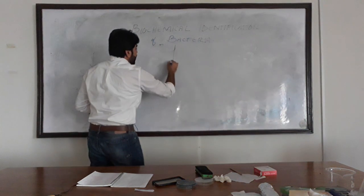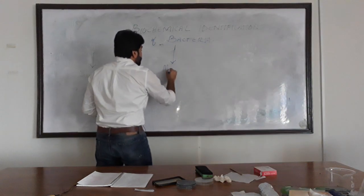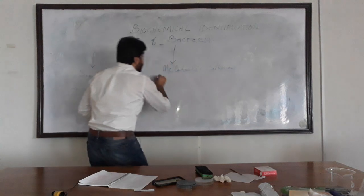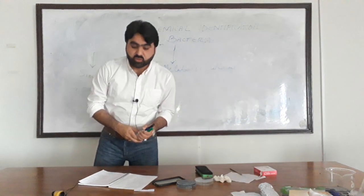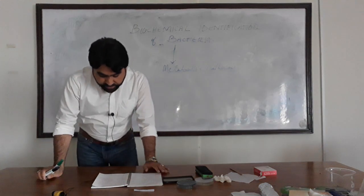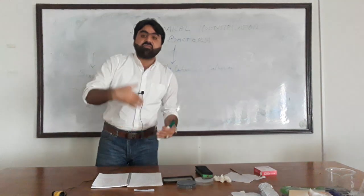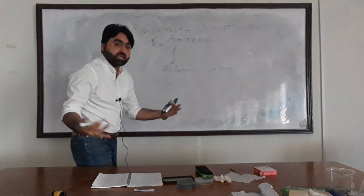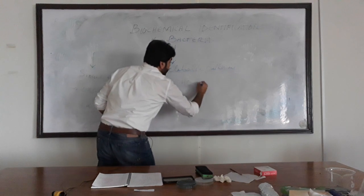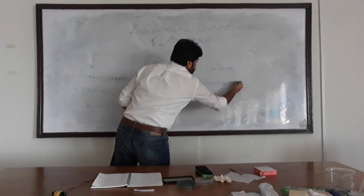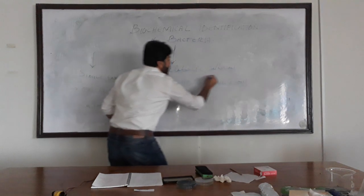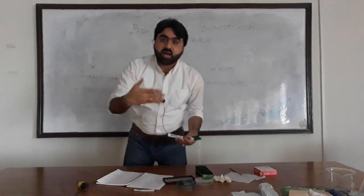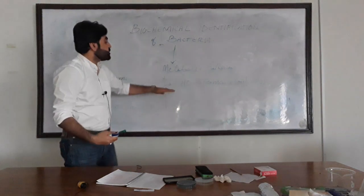The second aspect is the detection of a special metabolic pathway. We try to detect a metabolic pathway used by a bacterium, and we use different assays for different metabolic pathways. For example, we can use assays for the fermentation of carbohydrates. The most common test used in bacteriology for carbohydrate fermentation is Triple Sugar Iron, commonly known as TSI, which is a medium used for the detection of carbohydrate fermentation.